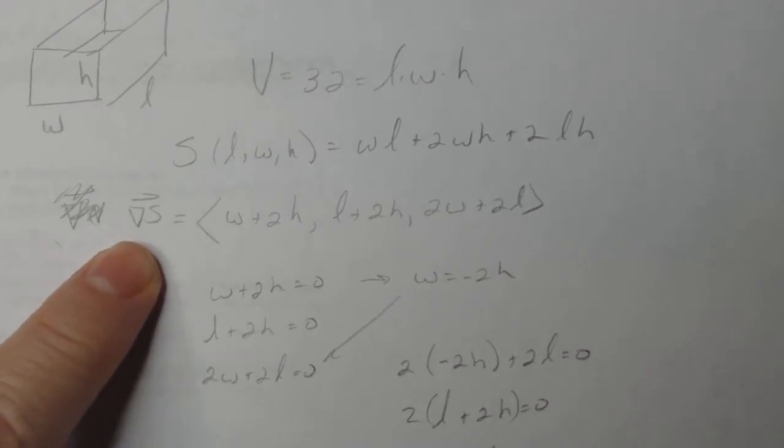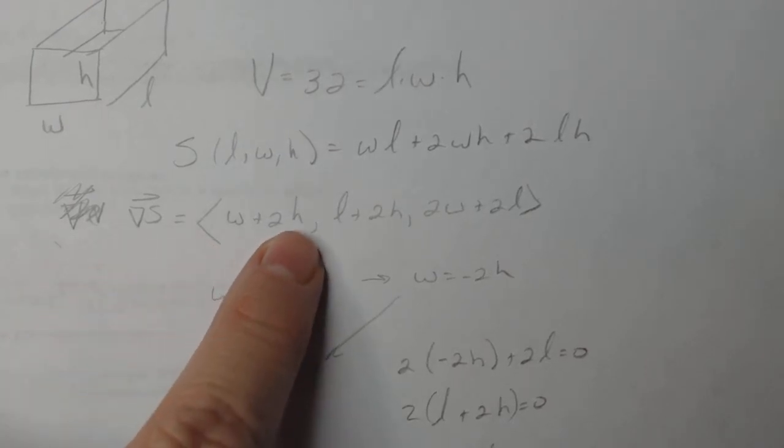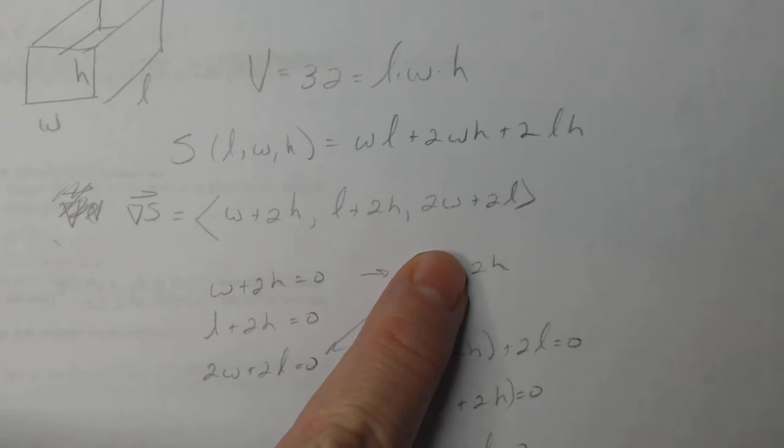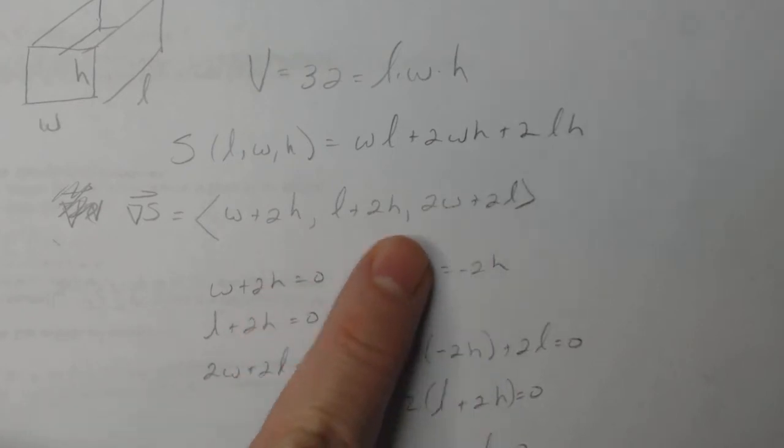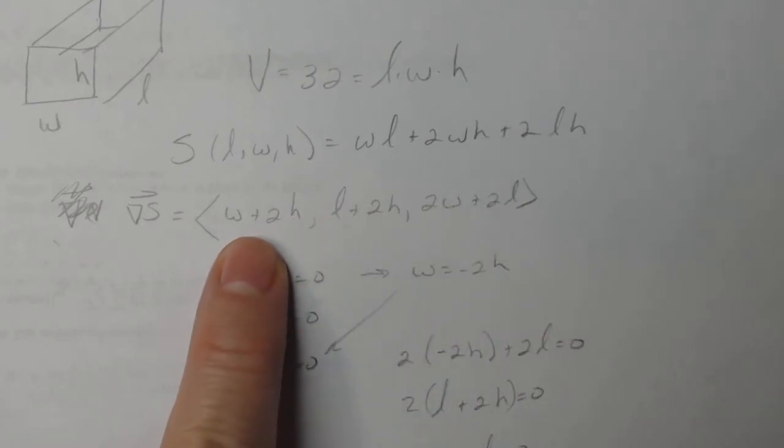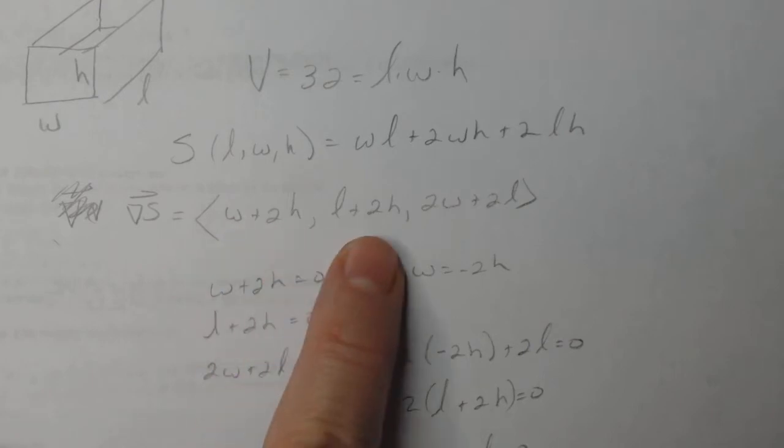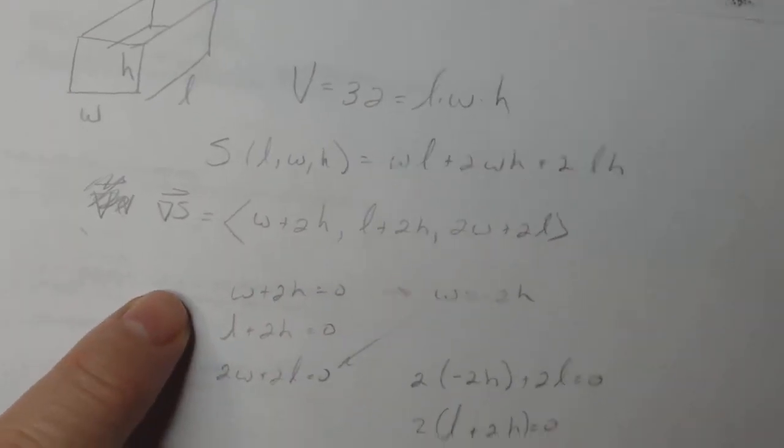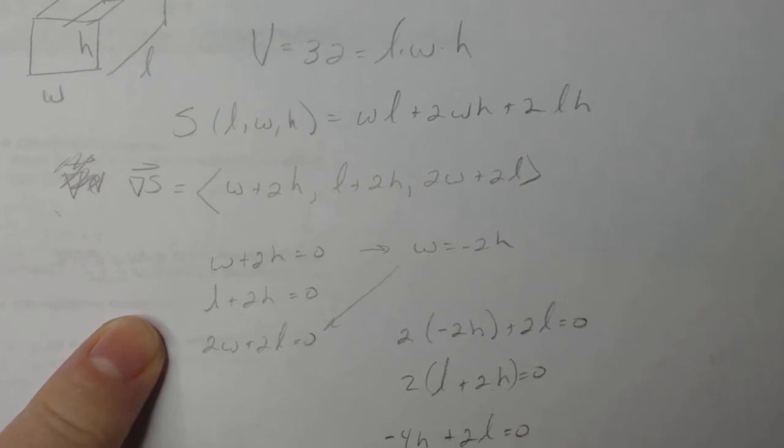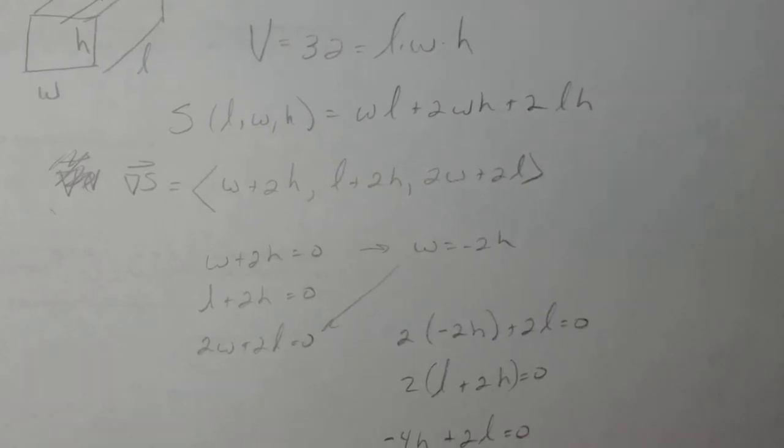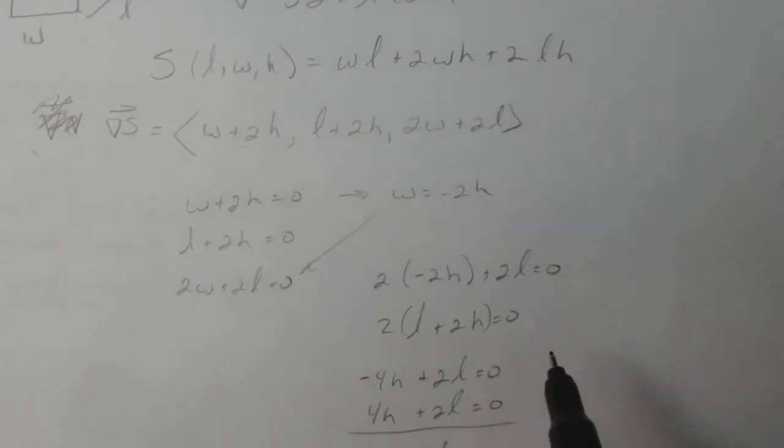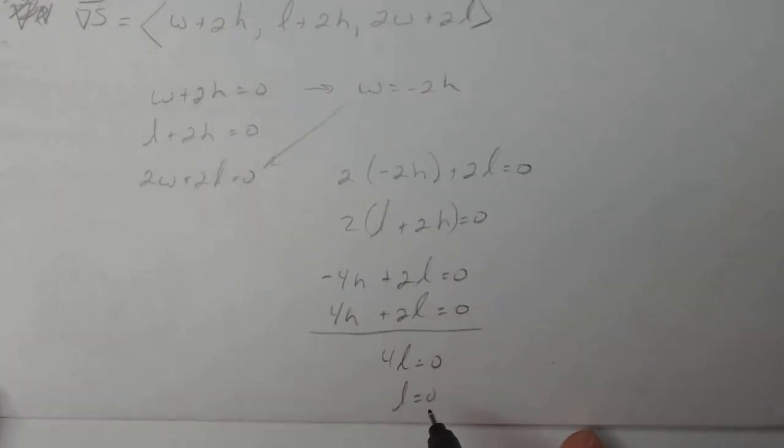So what I did is I did the gradient of S as if it was a three variable function. I have my three gradients here: s sub l, s sub w, s sub h. Now I set them all equal to zero, find where the gradient equals zero. And when I ended up working through it, I ended up getting that l was zero.